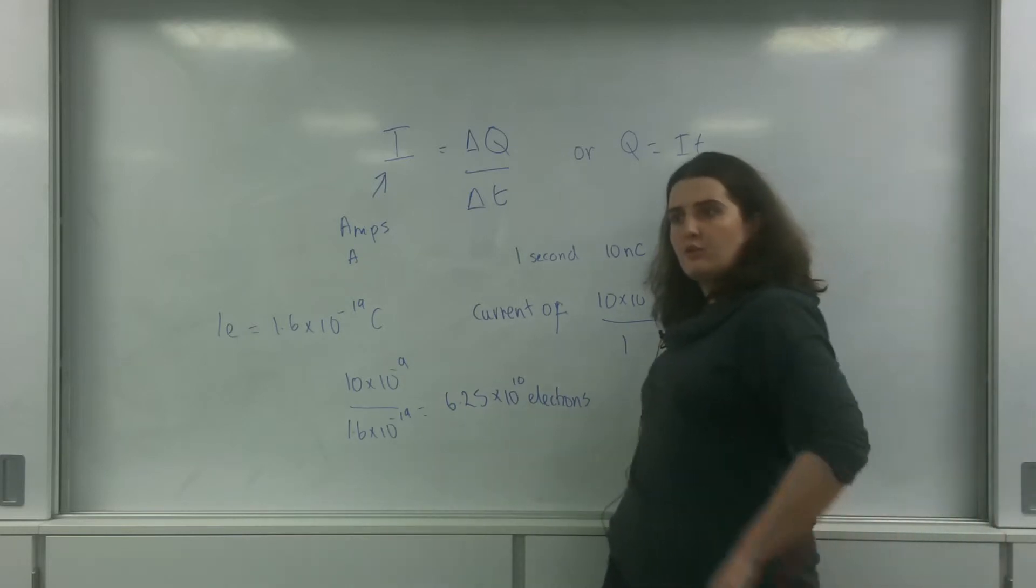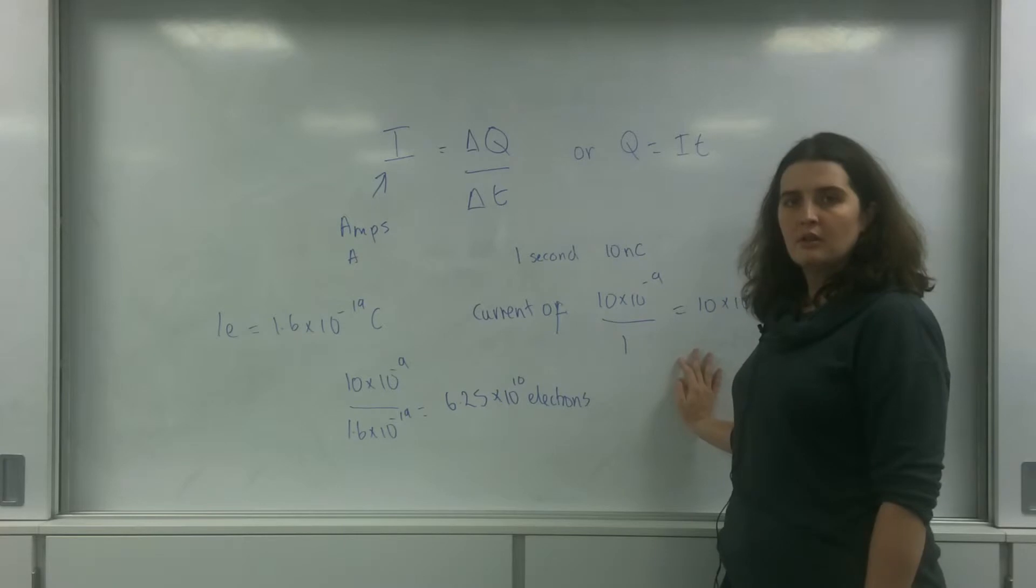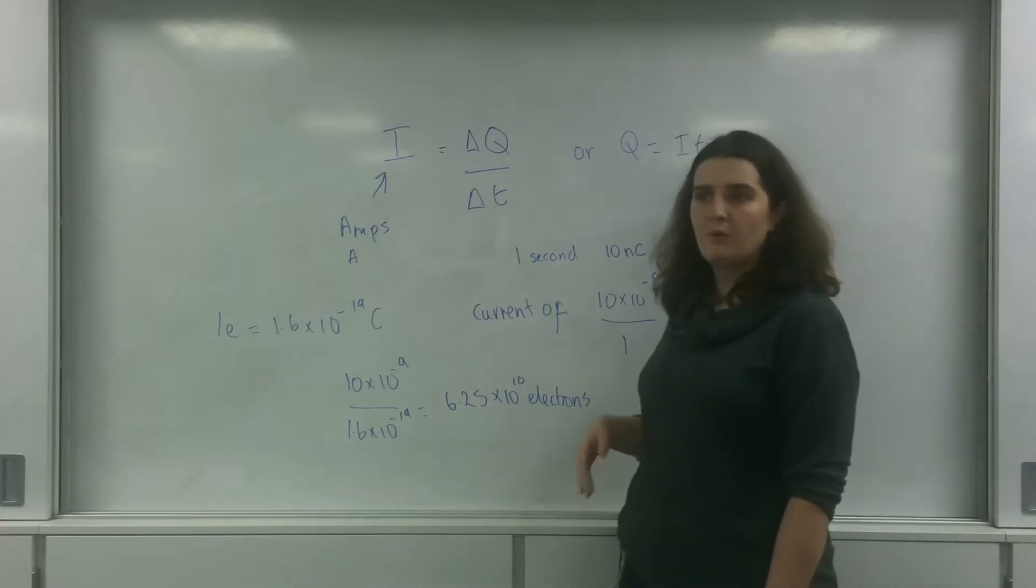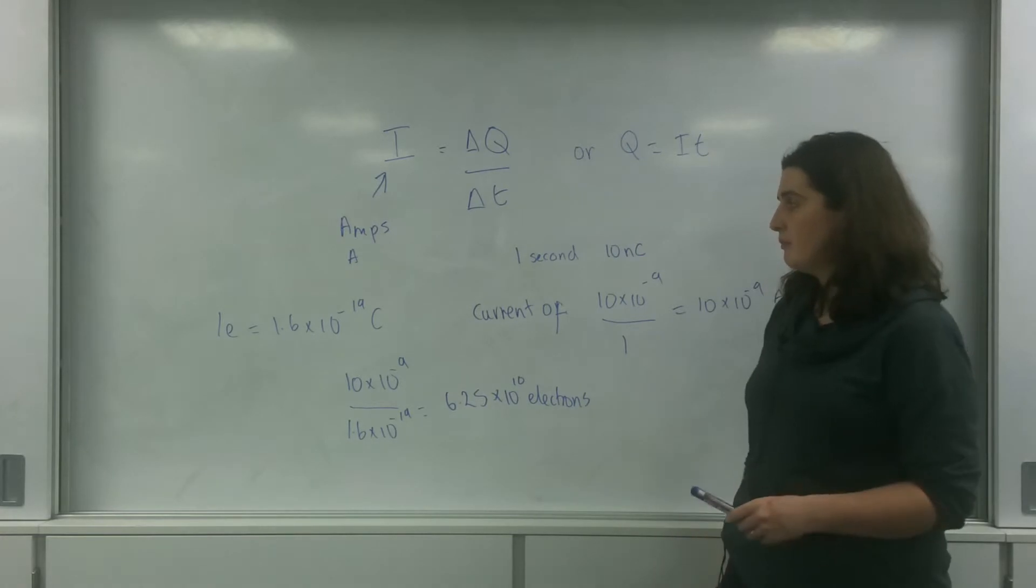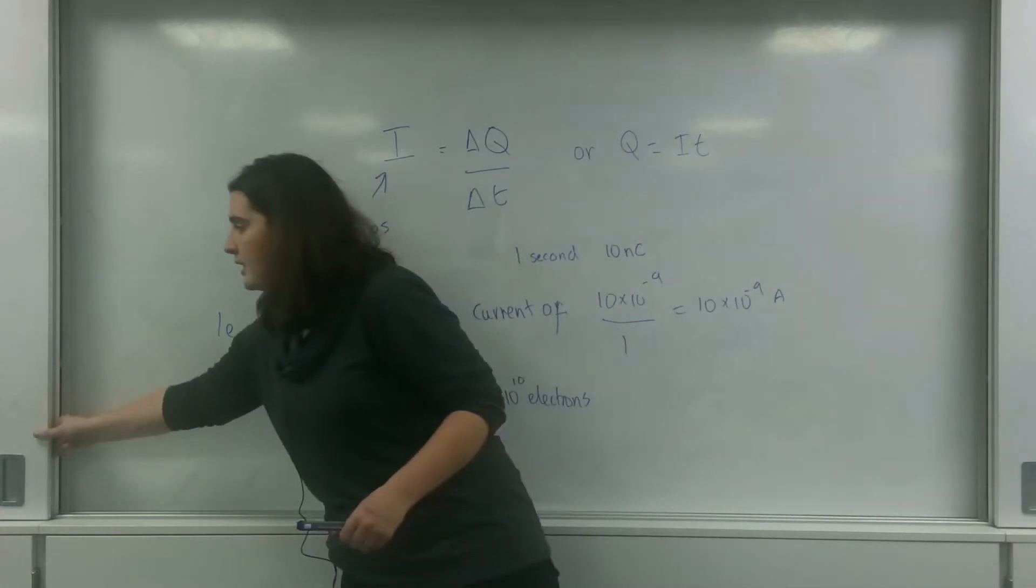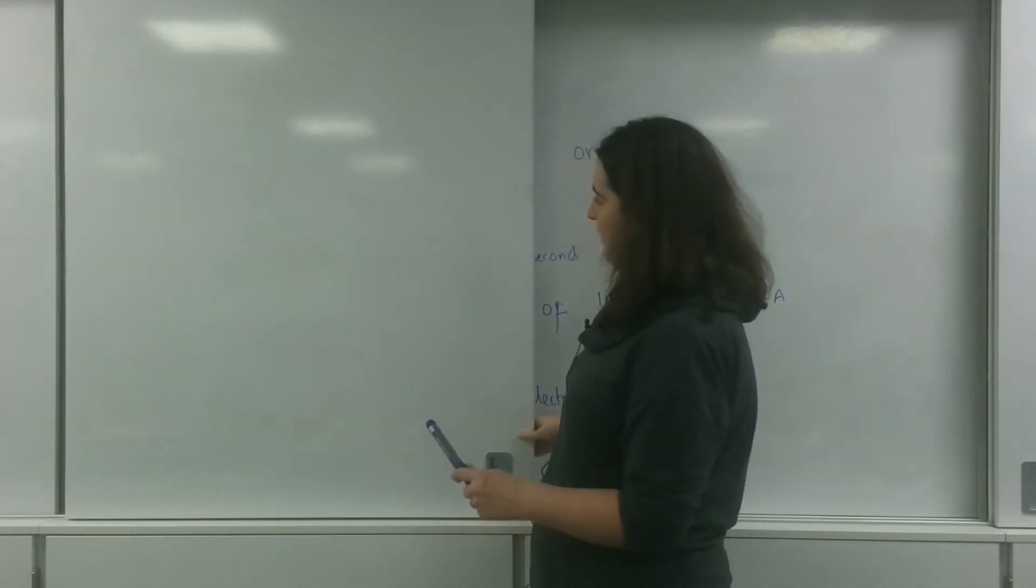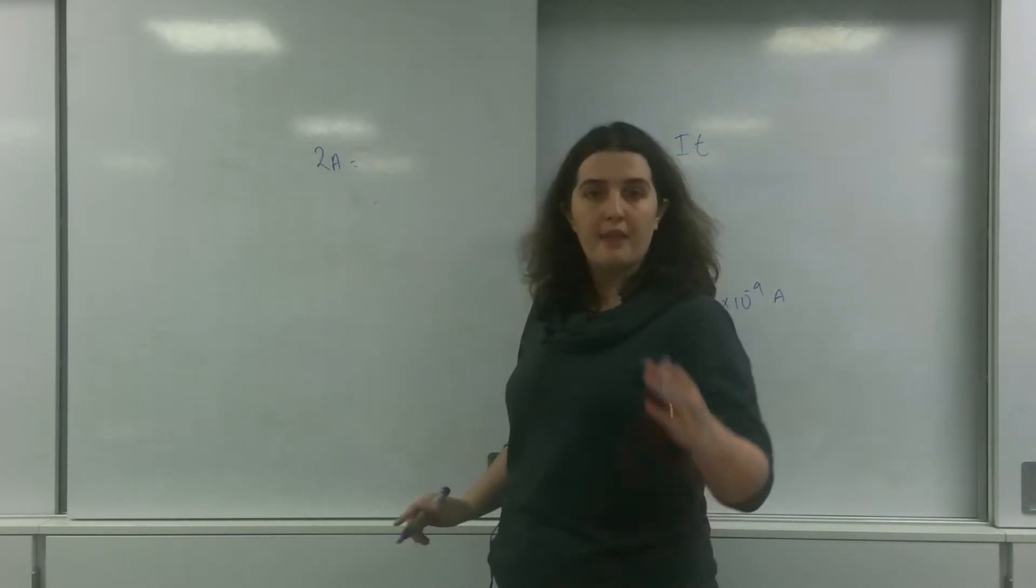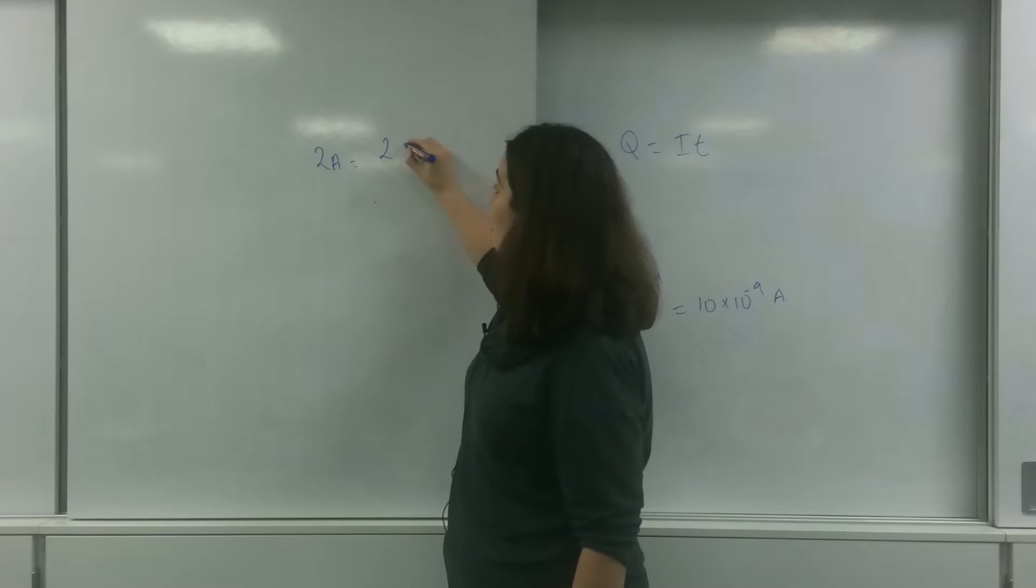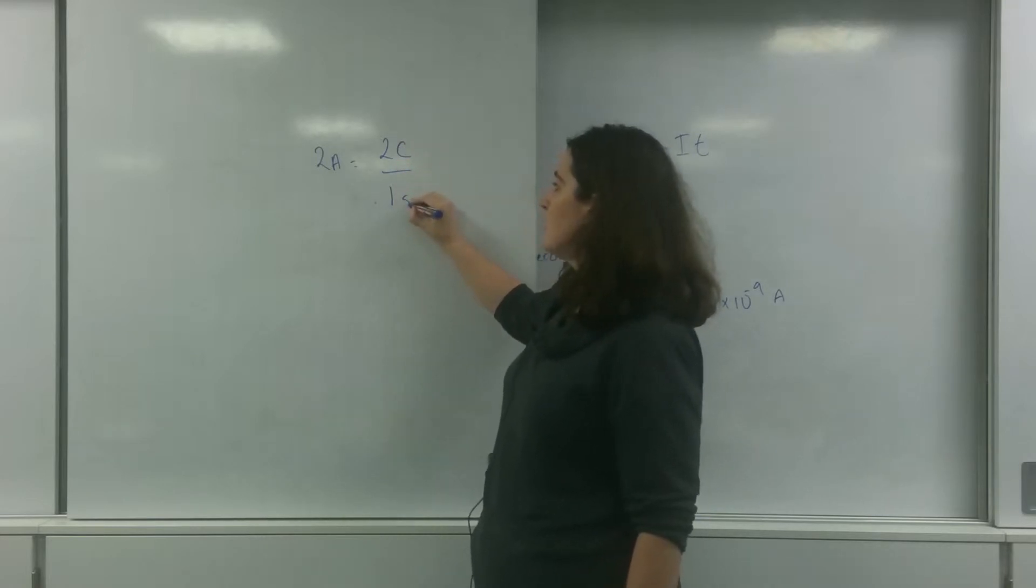So you can imagine when you see things that are 2 amps, that means in one second 2 coulombs are passing by. So if I had 2 amps, that means I will have 2 coulombs in one second.